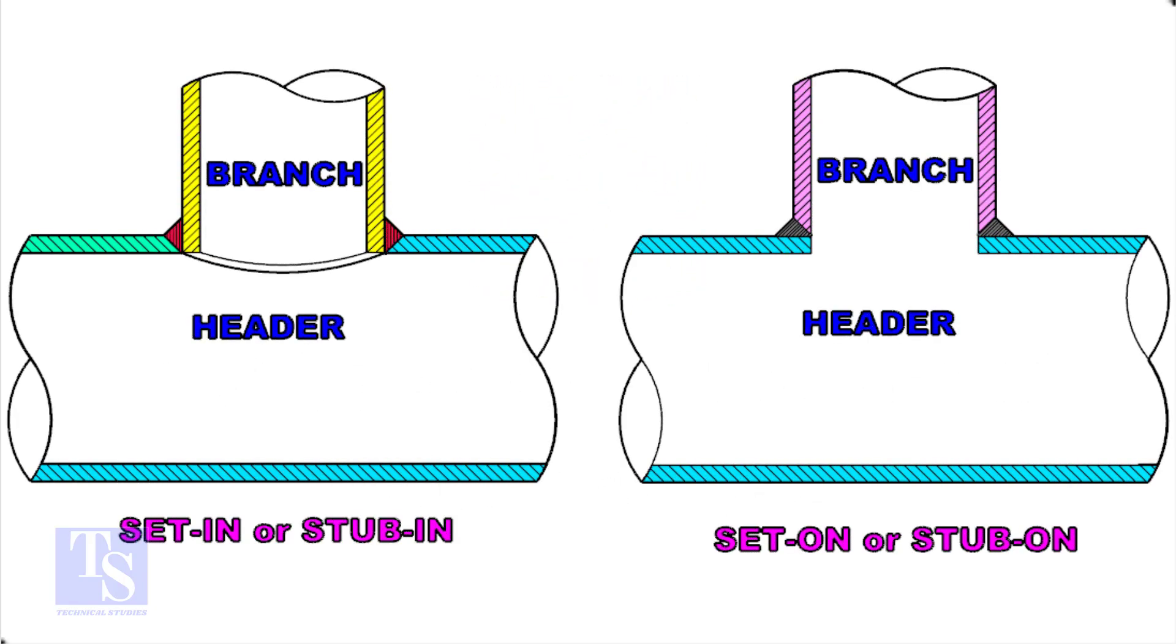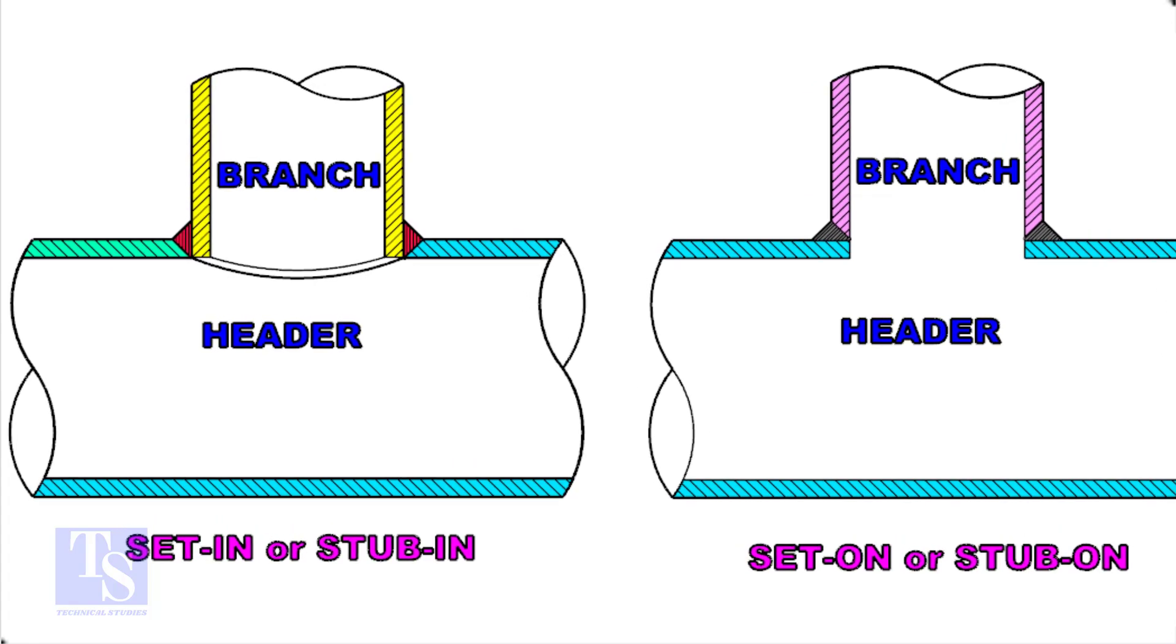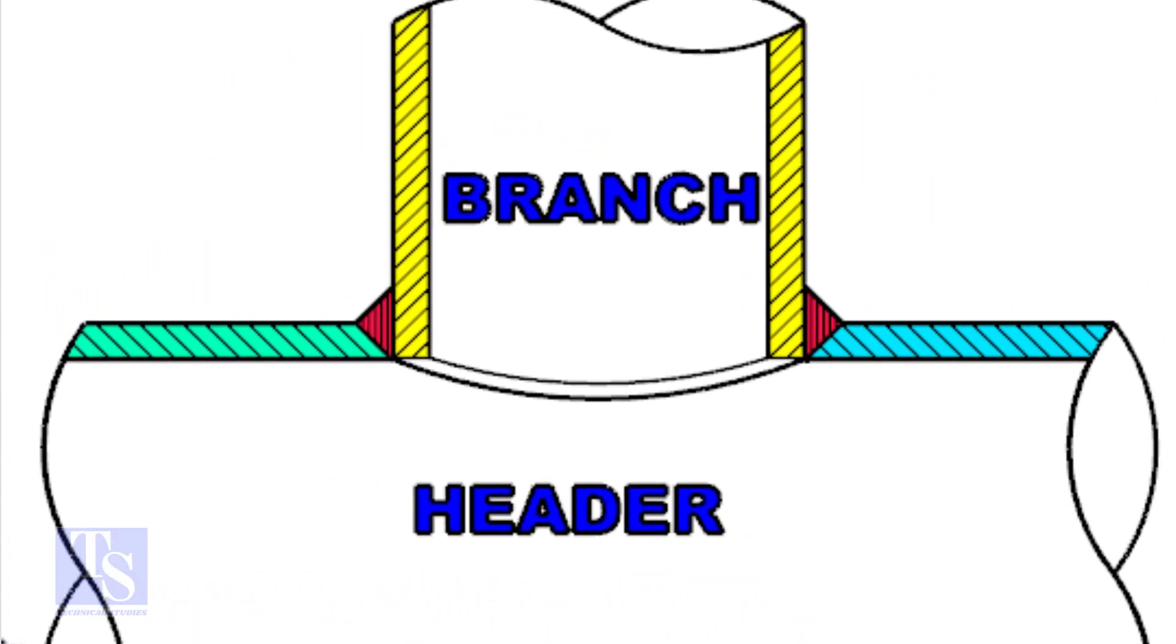Let us check the difference between a stub-in and stub-on connection. Look at the stub-in joint, the bevel is prepared on the header, and the branch pipe is in the header.